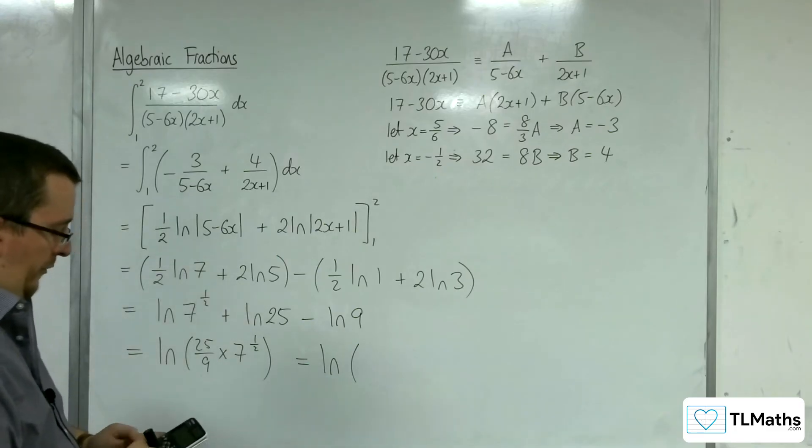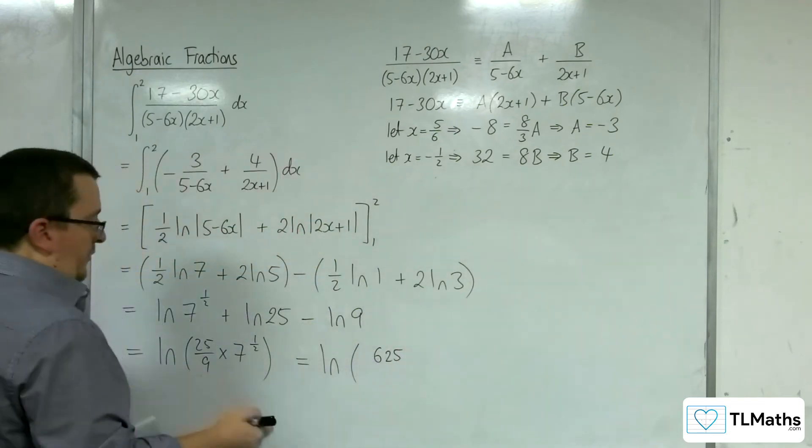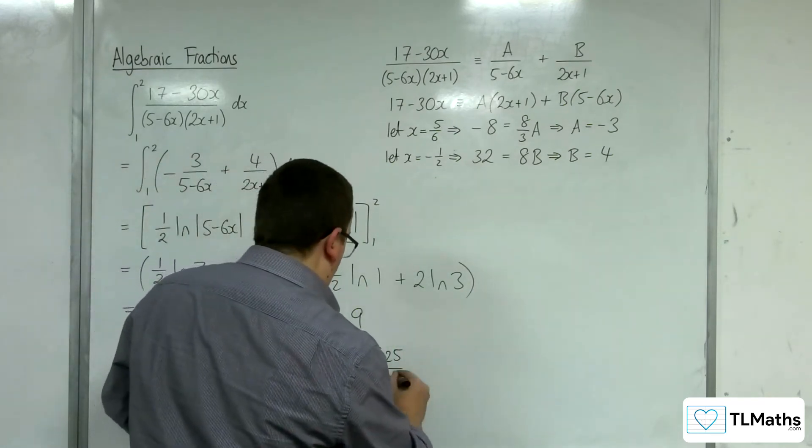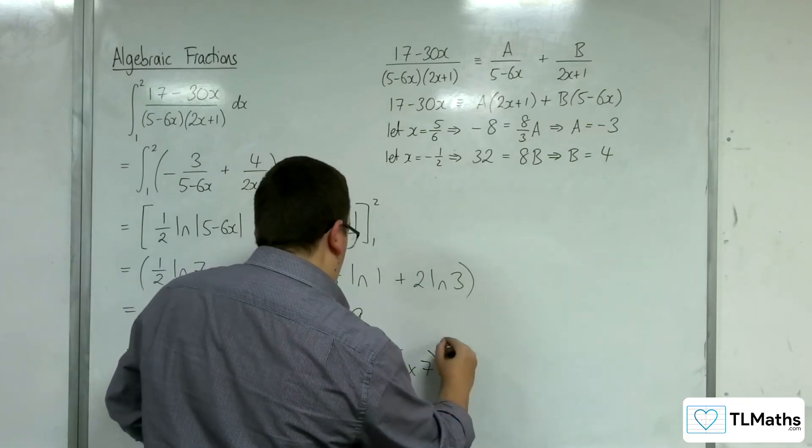So, if I do 25 squared, so 625 over 9 squared, 81, times by 7. Now, that's all to the half.